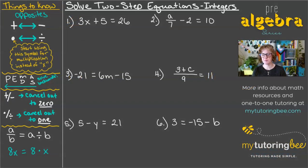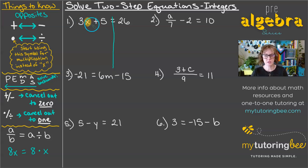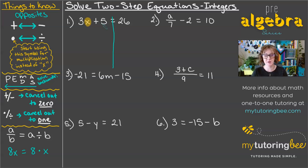We're going to start off with this first problem. We've got 3x plus 5 equals 26. The goal here is to get the variable x by itself on one side of the equation. I'm going to drop a line down through the equal sign — that gives me a left and a right side and helps me identify which side I want to be working on. I want to start on the left side because that is where my variable is.